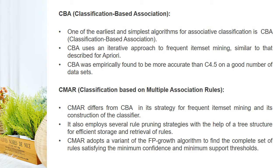The first method is CBA, that is Classification Based Association, which is one of the earliest and simplest algorithms for associative classification. It uses an iterative approach to frequent itemset mining similar to that of Apriori. CBA was empirically found to be more accurate than C4.5 on a good number of datasets.